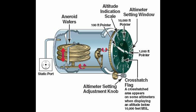Obviously the higher you go, the less air pressure there is. At about 18,000 feet, it's about half of what it is at sea level. And at sea level, if you take every day over the course of a year and average it out, the average pressure at sea level is 29.92 inches of mercury.